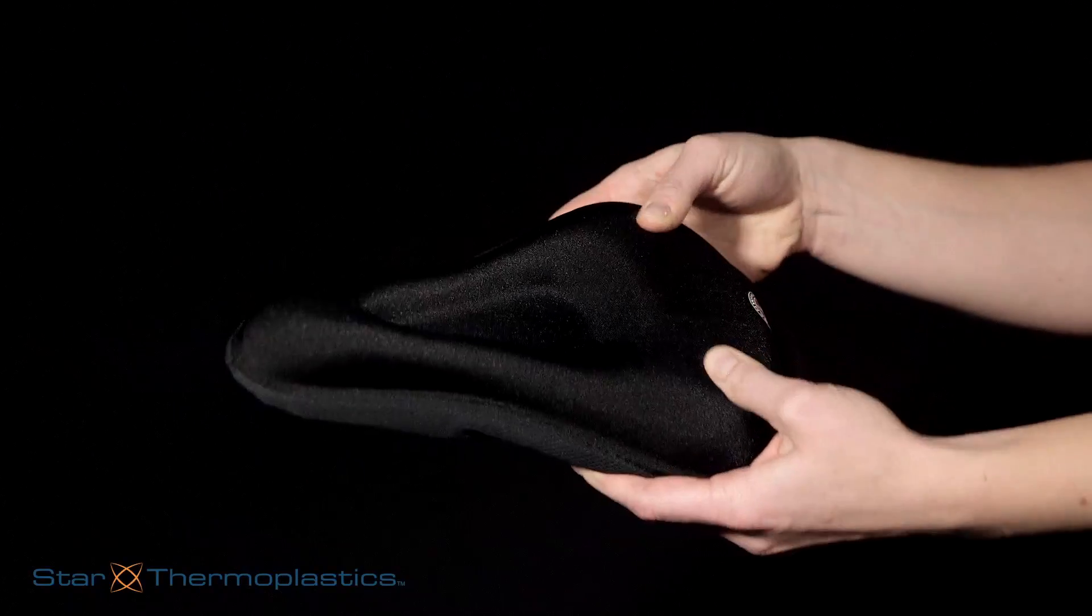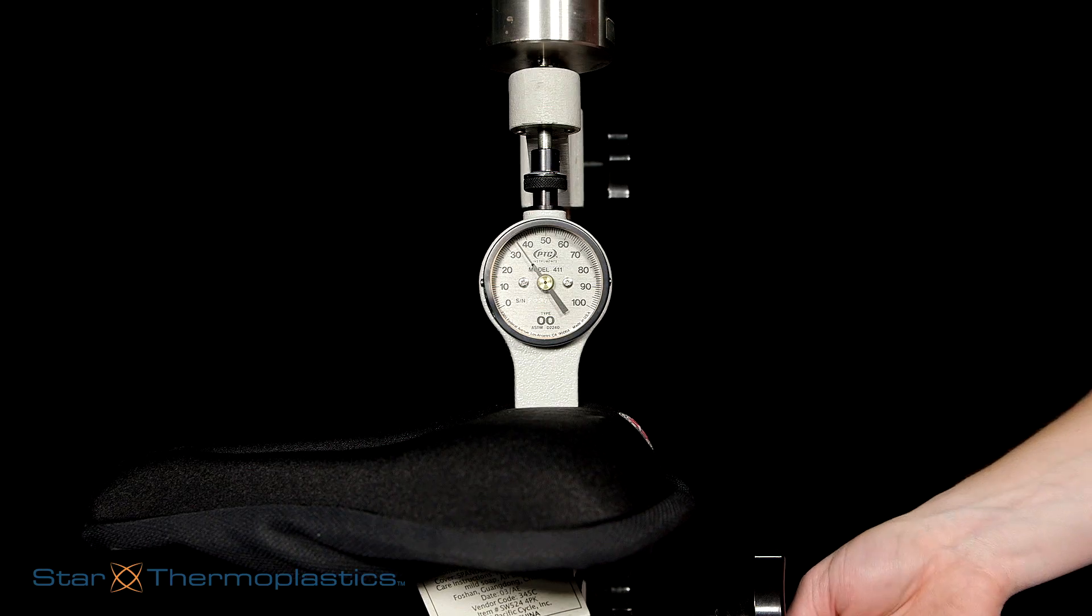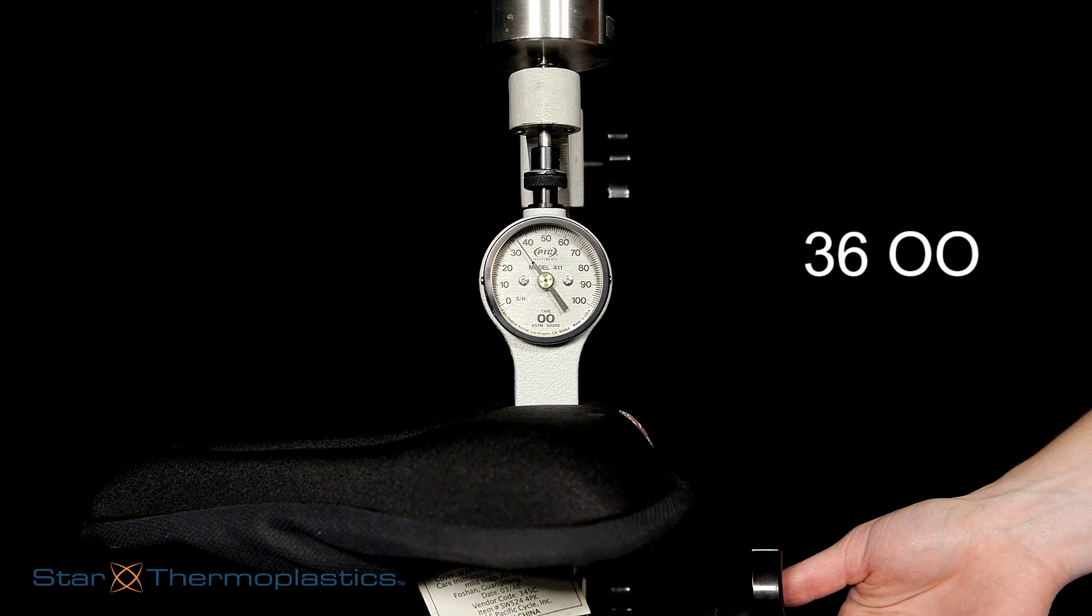We will start with a bicycle seat that riders use to ease soreness from long rides. The durometer is about a 36 double-aught.